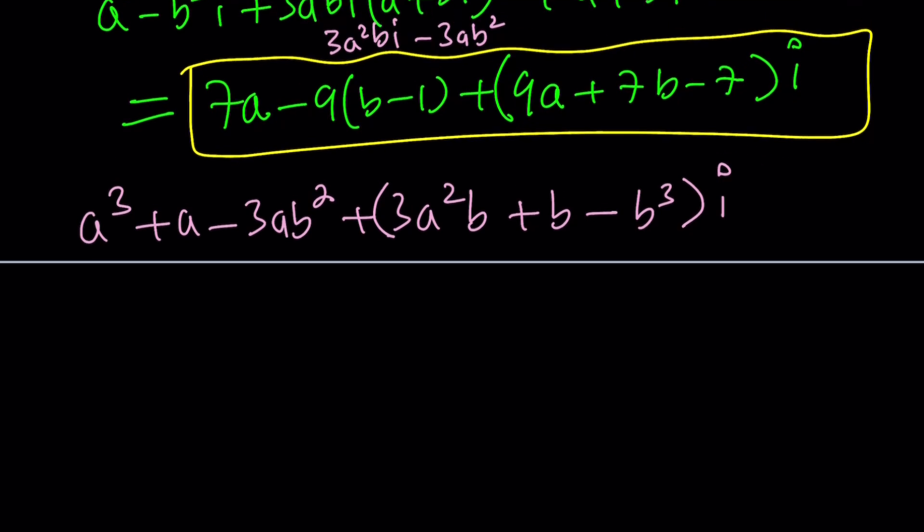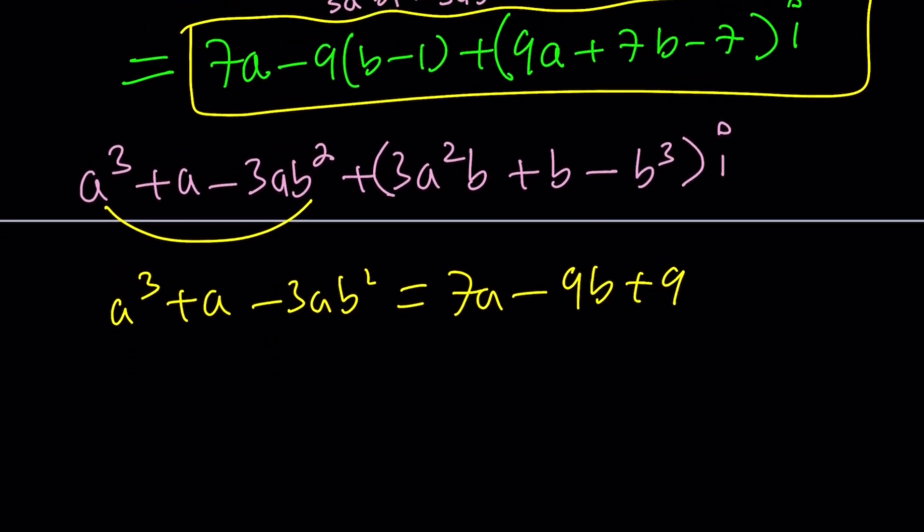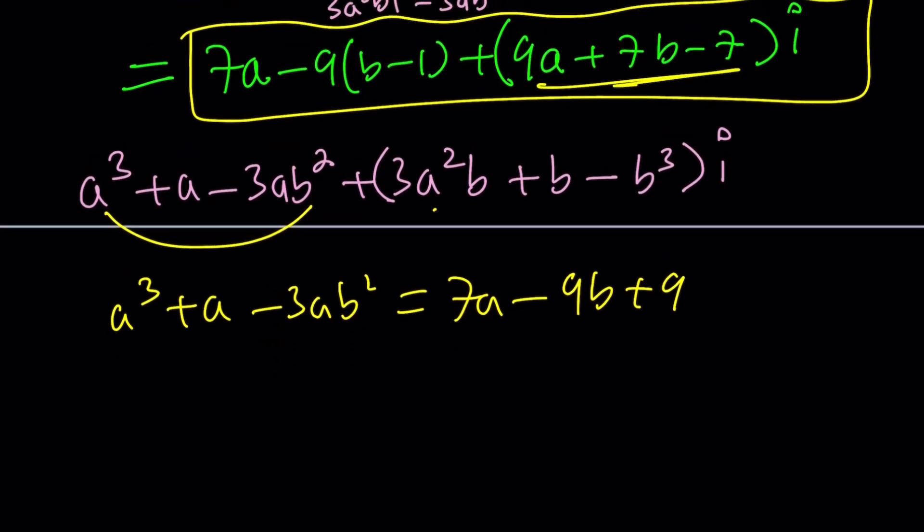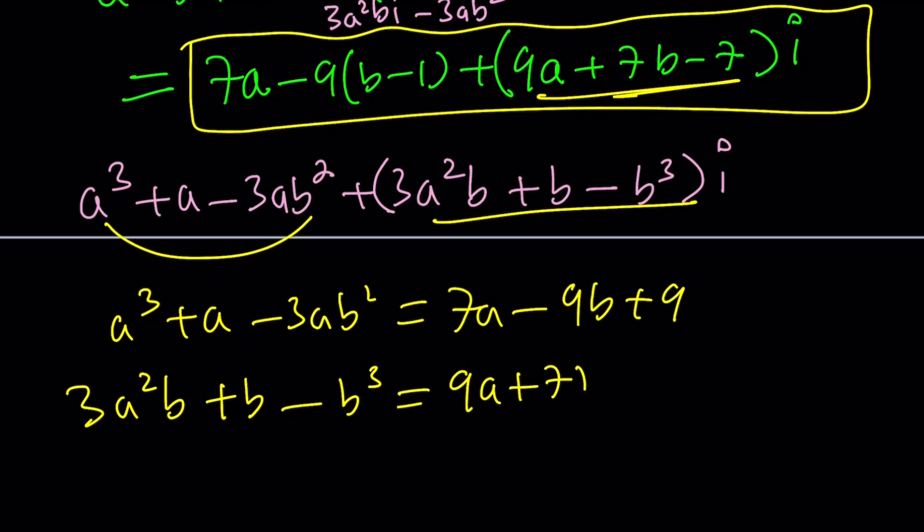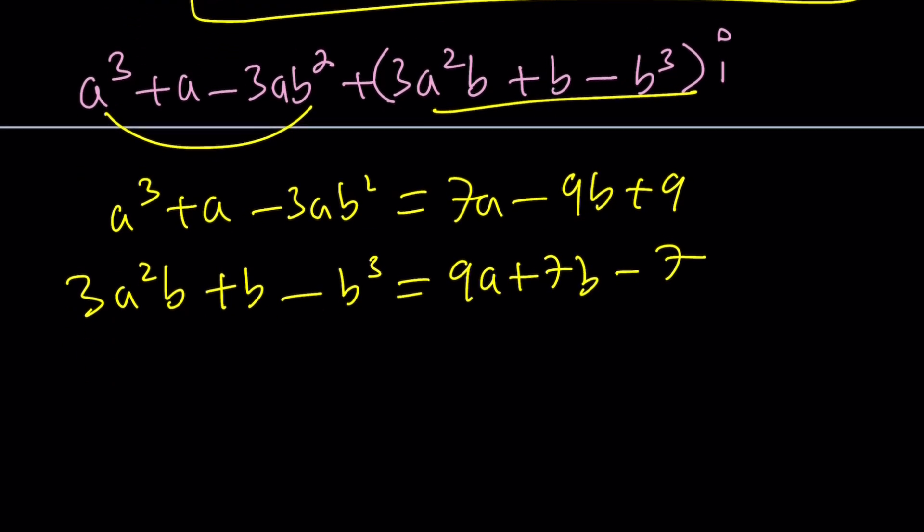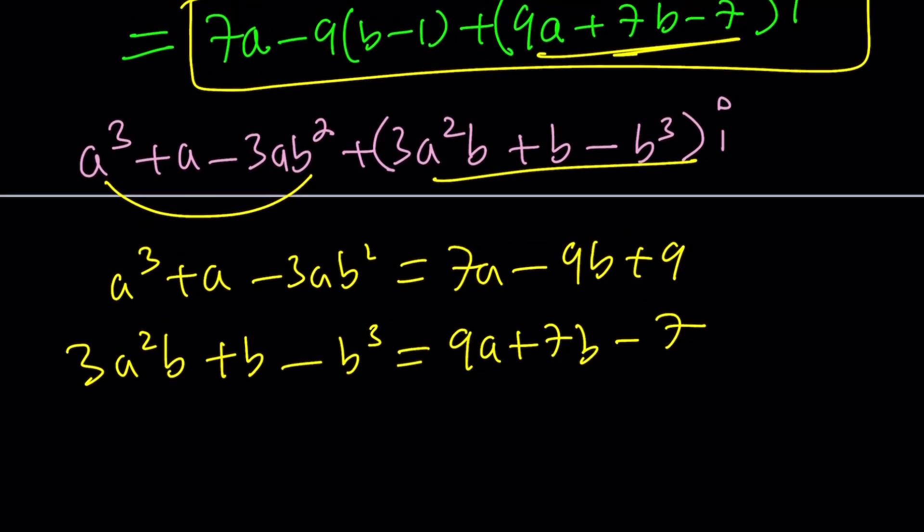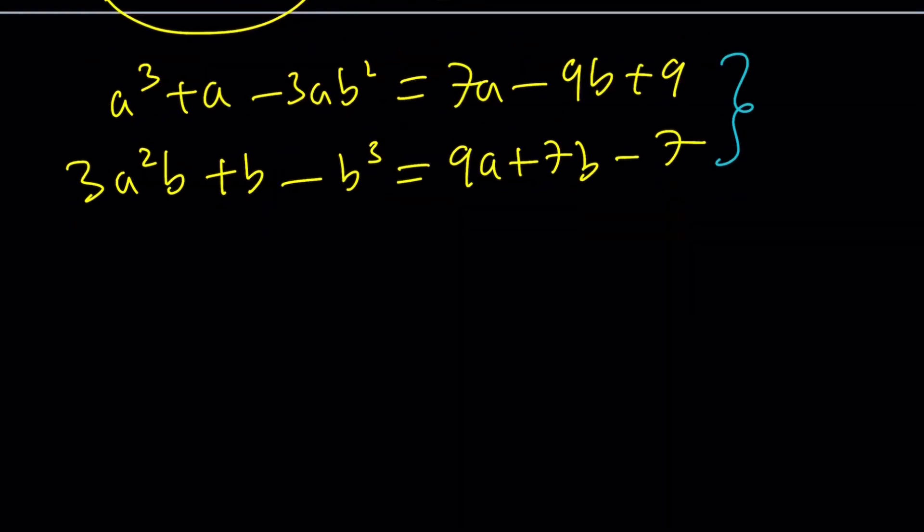From here, you get the following. This is the real part, and that's supposed to equal the other real part, which I can expand and write as follows. Then of course, the imaginary parts are also going to be equal. This is the imaginary part. Let's use the bottom one first. That equals the top one, imaginary part 9a+7b-7. Awesome. You got yourself a really problematic system, but it can be solved. But again, that's a lot of work.